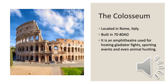Our last building is the Colosseum, which I'm sure many of you have seen before when you studied the Romans. It is located in Rome, Italy, and is the oldest of our structures, built in 70 to 80 AD. It was used as an amphitheatre for hosting gladiator fights, sporting events, and even animal hunting. It was a way for emperors to show off their wealth and power. Obviously it does not function as that anymore, but that was its original purpose.